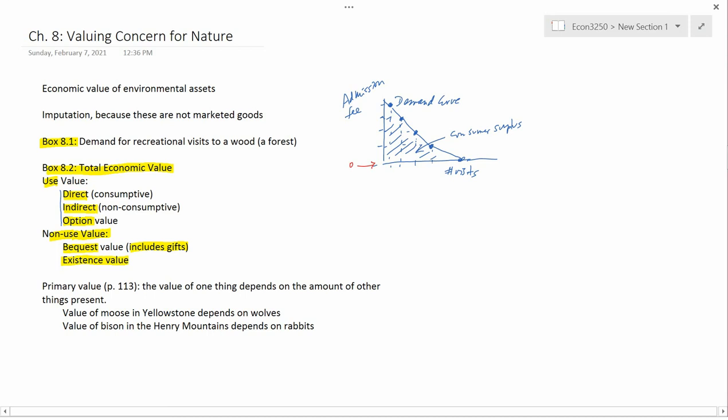And lastly, I write here existence value. So existence value is the value you put on the existence of something even if you're not, if you don't have any direct use value for it, you don't have any indirect use value for it, you don't have any option value for it, and you don't have any bequest value for it. In other words, even if you didn't have any of those other kinds of values, you still might enjoy knowing that this natural amenity exists. For example, that there are whales in the ocean, that whales exist, or that elephants exist in the wild in Africa.